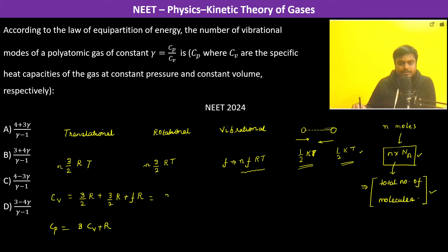What is C V? C V is 3 plus F into R. Therefore C P is 4 plus F into R. Now C P by C V is going to be gamma.